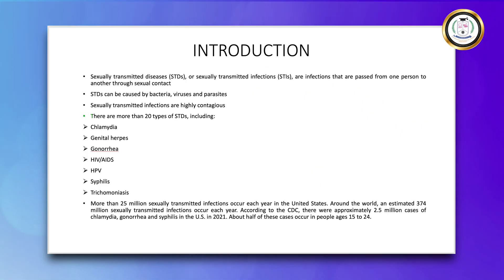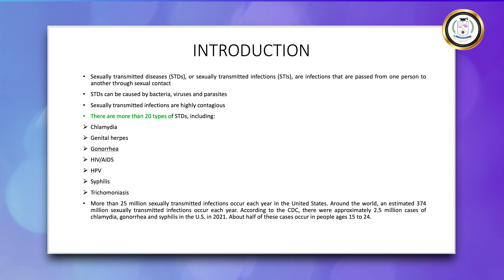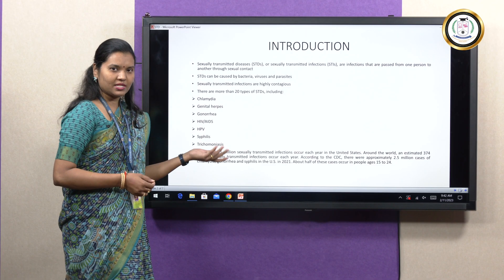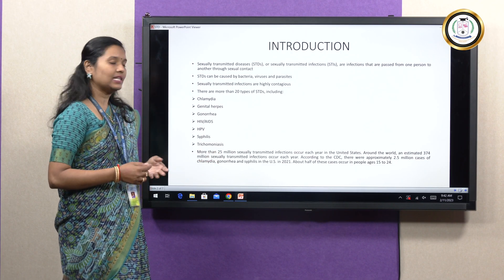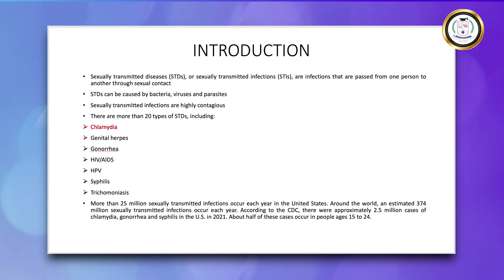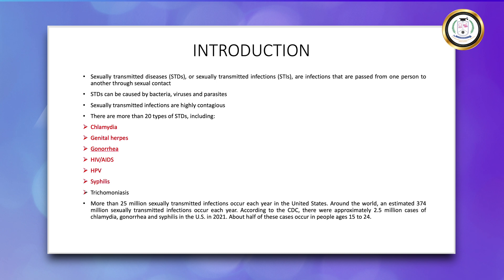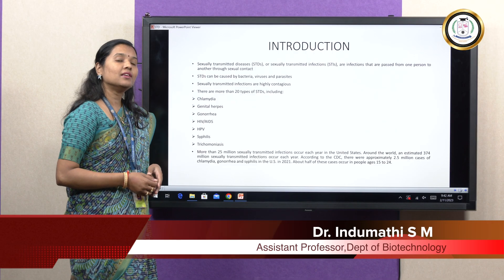There are nearly 20 different types of sexually transmitted diseases, and a few are listed here: Chlamydia, Genital Herpes, Gonorrhea, AIDS caused by HIV, HPV or Human Papilloma Virus infections, Syphilis, as well as Trichomoniasis which is caused by Trichomonas vaginalis.